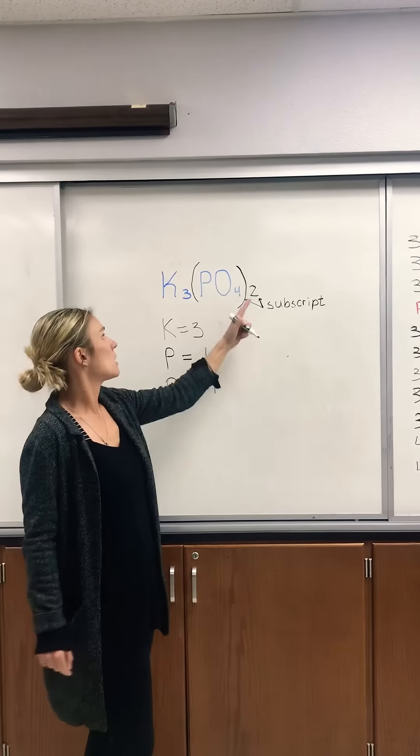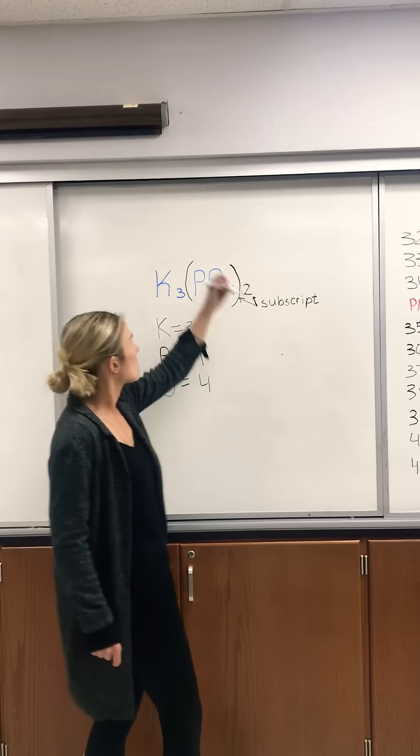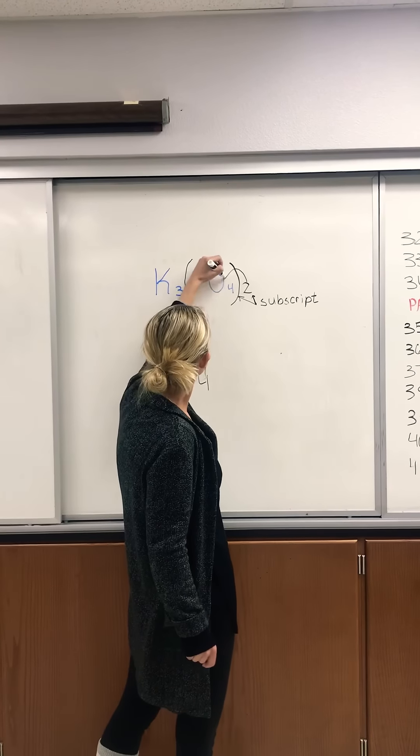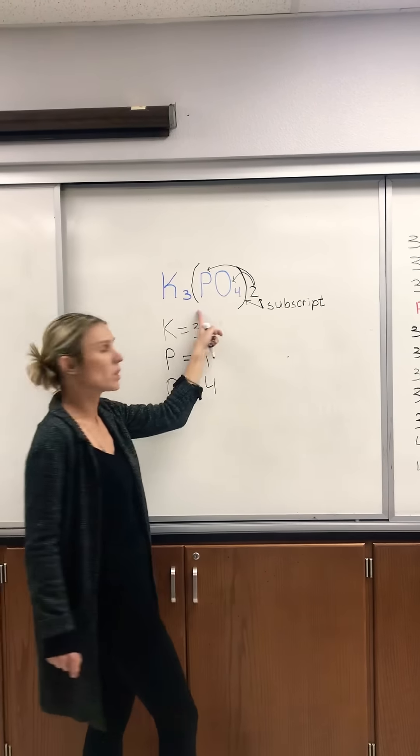The number outside the parentheses distributes the same way it does in your algebra class. So this two will go with oxygen and with phosphorus only because they're in parentheses.